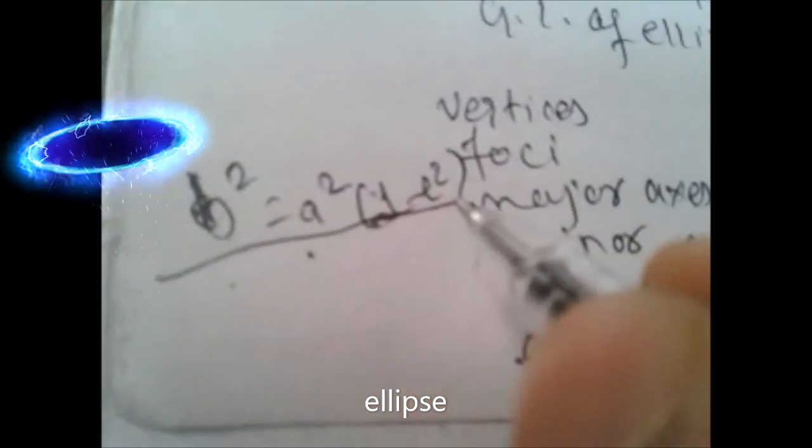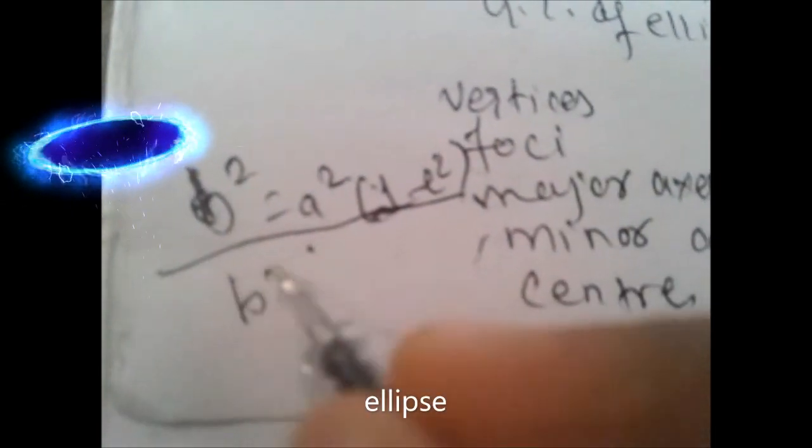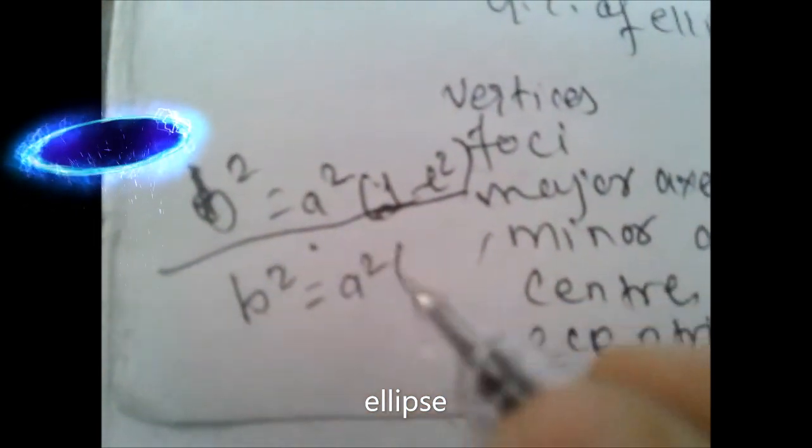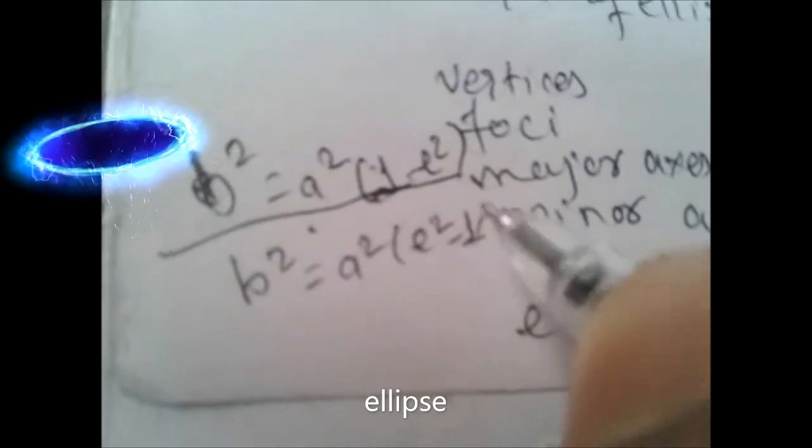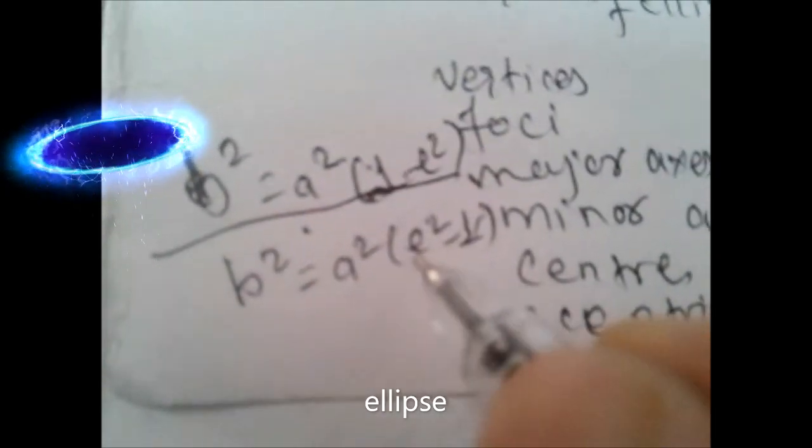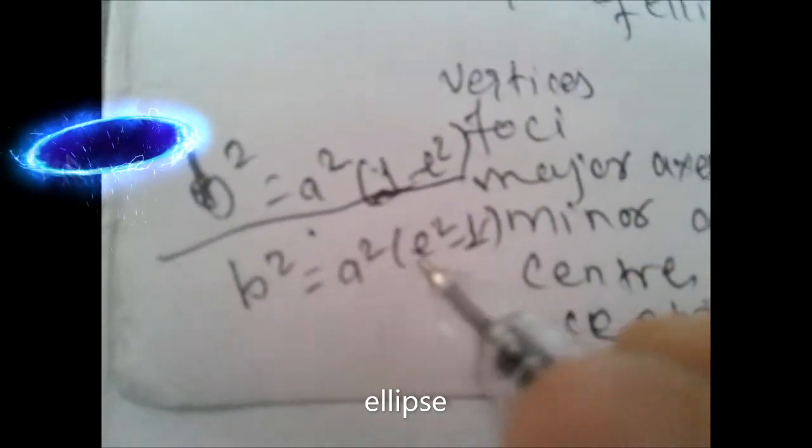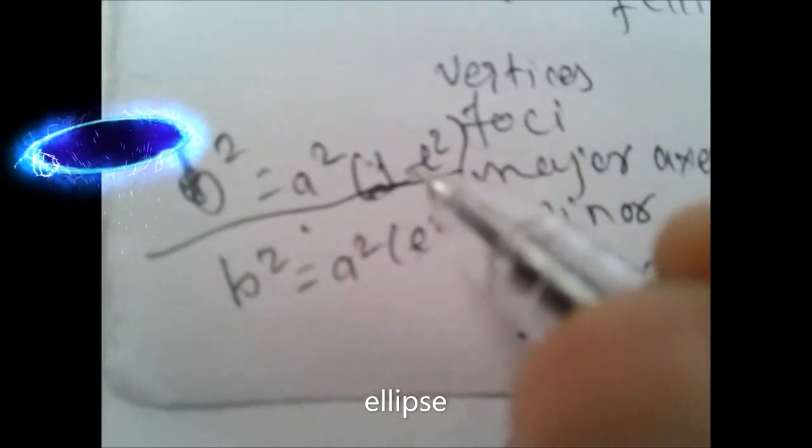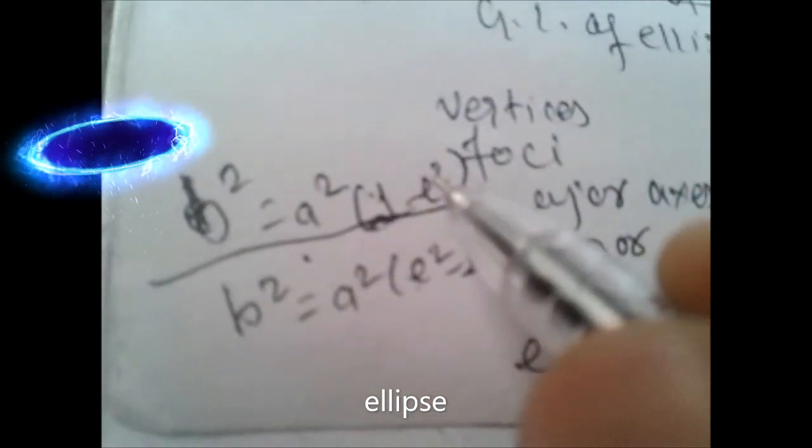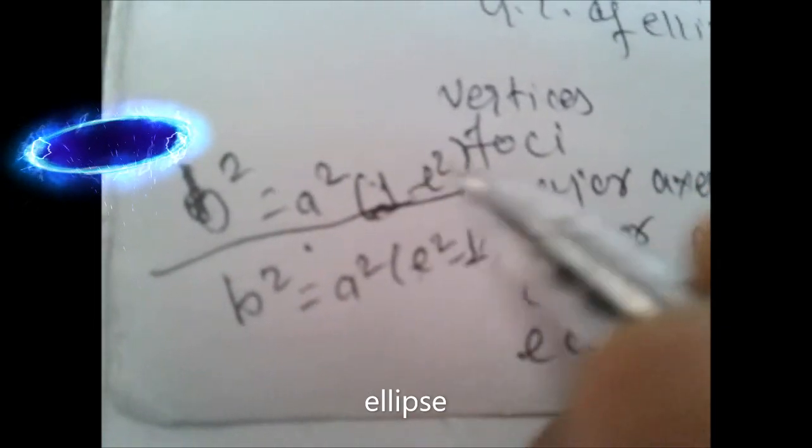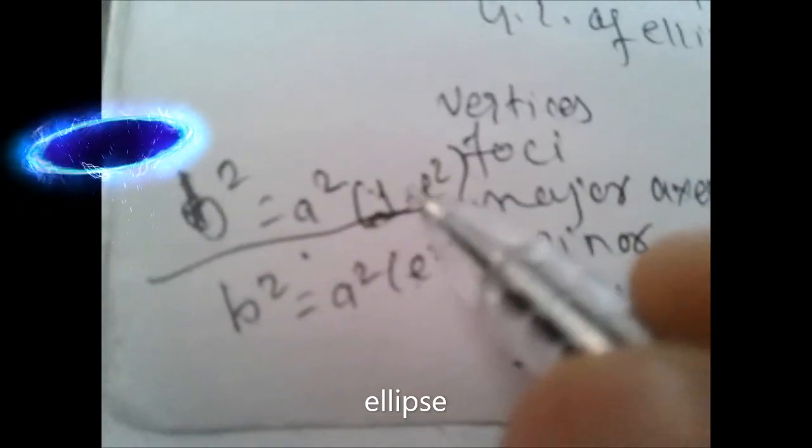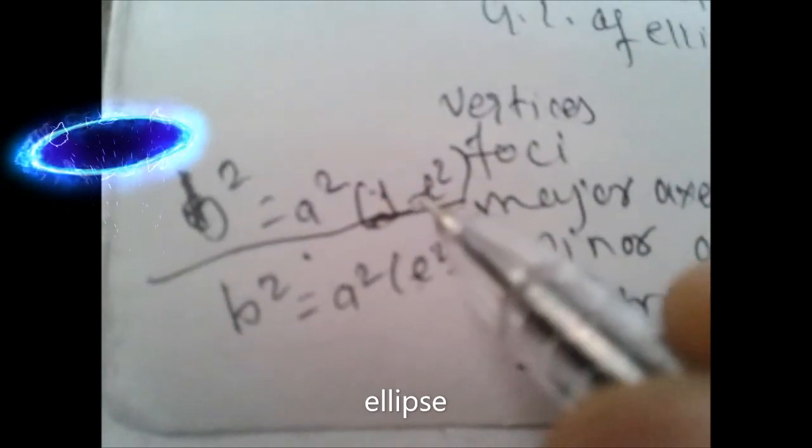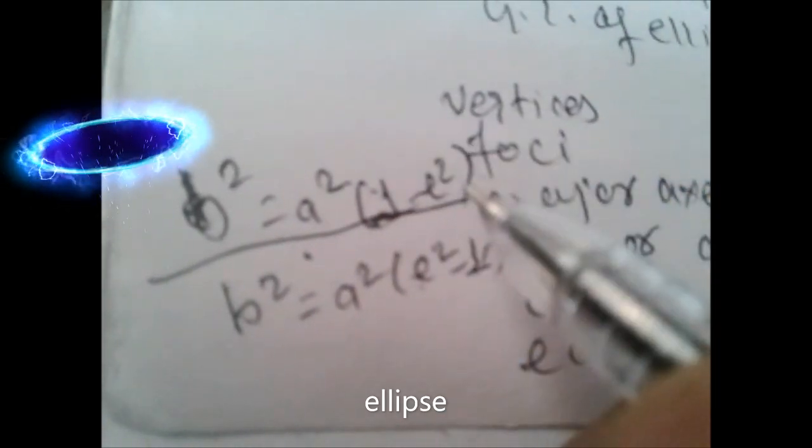For eccentricity in ellipse, it's b² = a²(1 - e²), and for hyperbola it's b² = a²(e² - 1). Since in hyperbola e is greater than 1, it comes before 1. In ellipse, e is less than 1, so we put e after 1 so that it doesn't become negative.